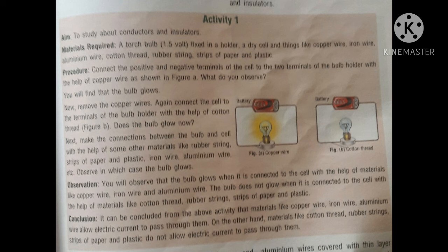This time the bulb does not glow. Next, make the connection between the bulb and the cell with the help of some other materials like rubber string, strips of paper and plastic, iron wire, aluminum wire, etc. Observe in which case the bulb glows. Observation: The bulb glows when it is connected to the cell with the help of materials like copper wire, iron wire, and aluminum wire.